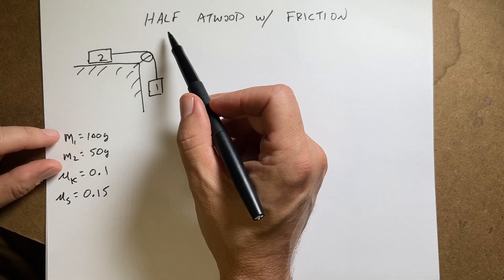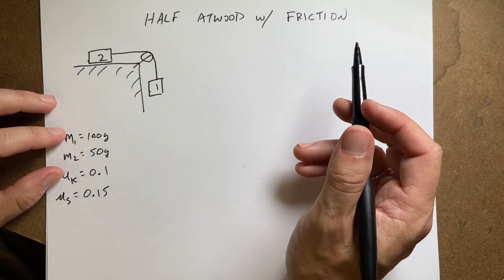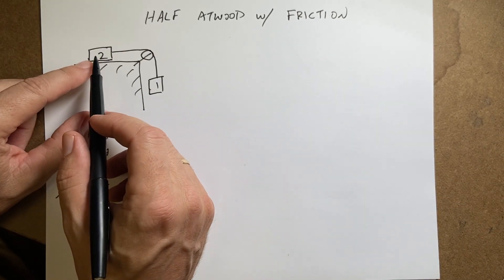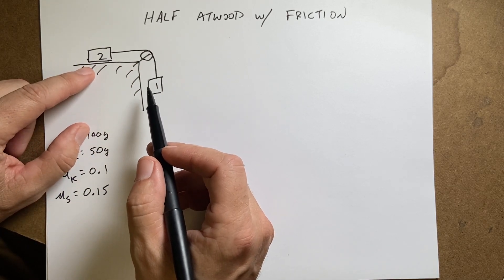Hello. I'm doing a whole bunch of Atwood machine problems. Today's problem I'm going to solve is a half Atwood machine with friction. The half Atwood machine has a block on a table and a block hanging over a pulley like that. They're two different masses.